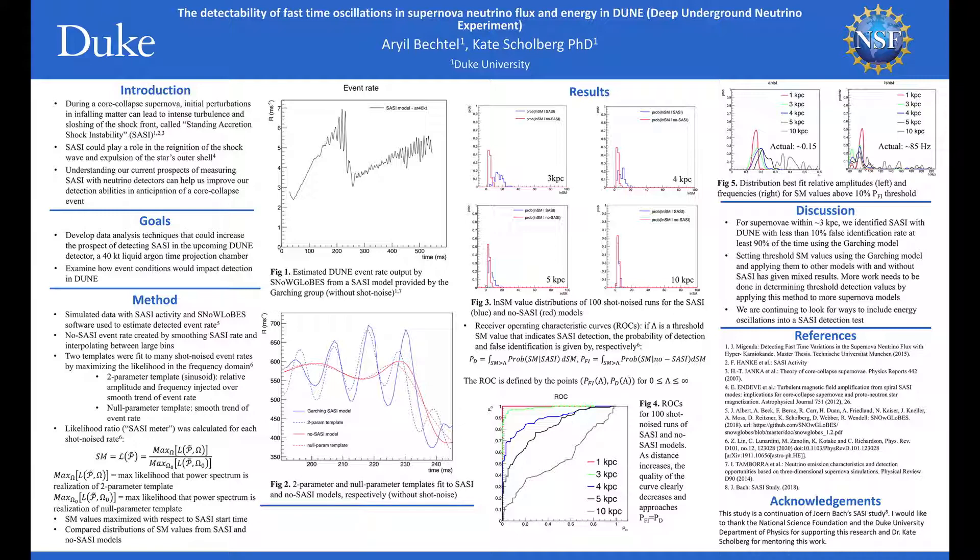We then examined the distribution of SASI meter values for each model at different distances. The blue distributions in Figure 3 represent the probability distribution of SASI meter values given that SASI activity is present in a given shot-noised rate. The red distributions, conversely, represent the distribution given no SASI oscillations are present.